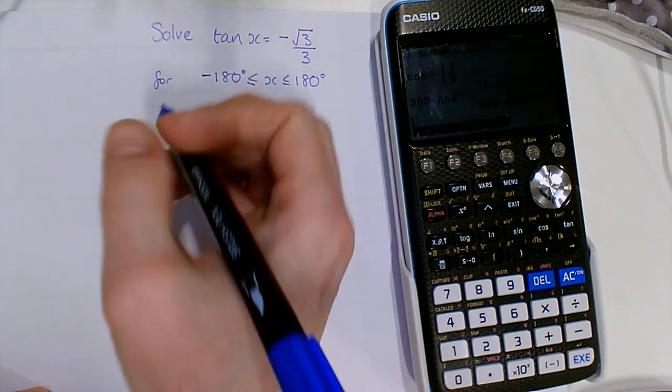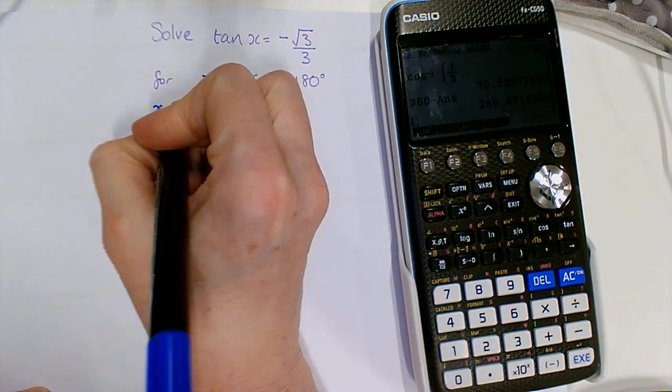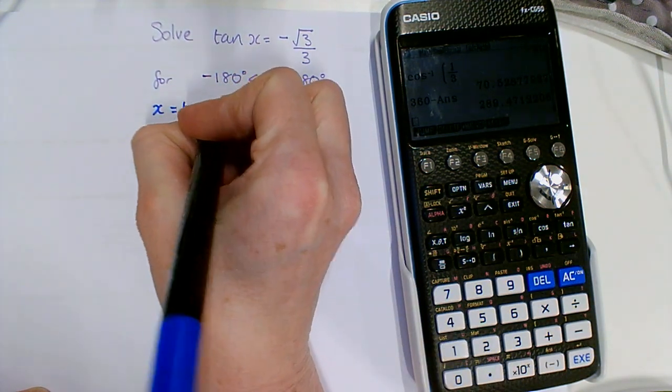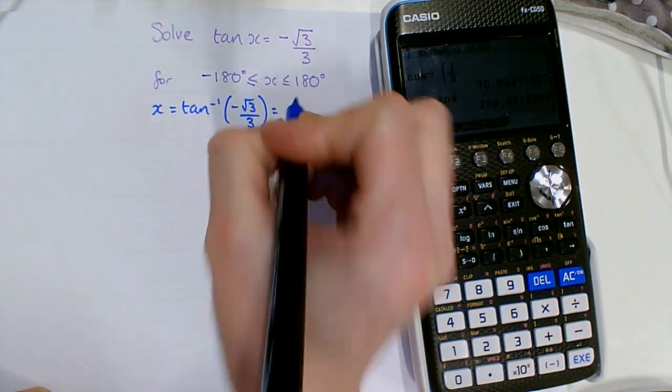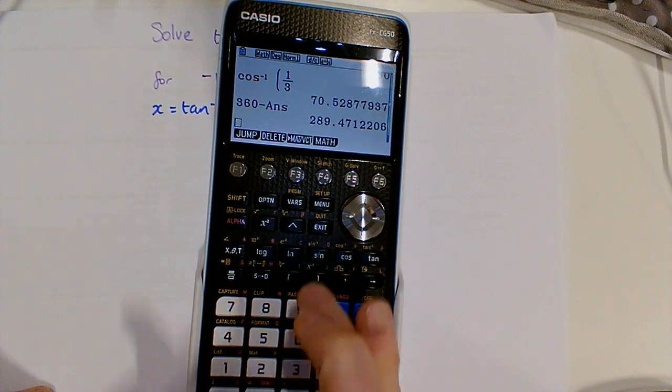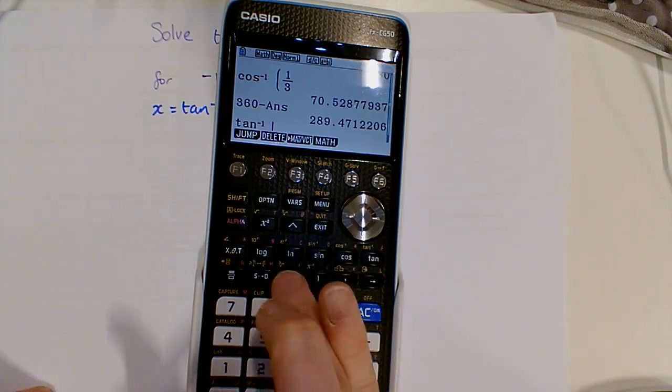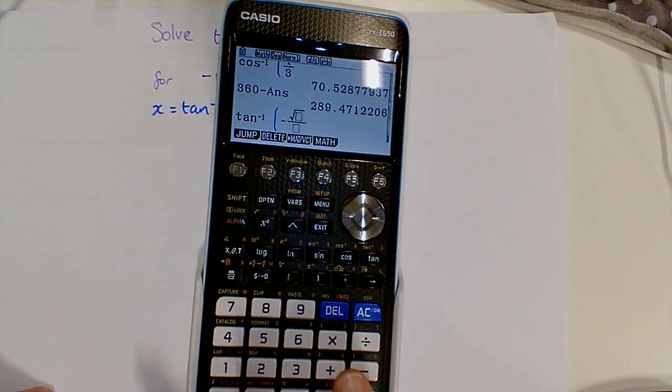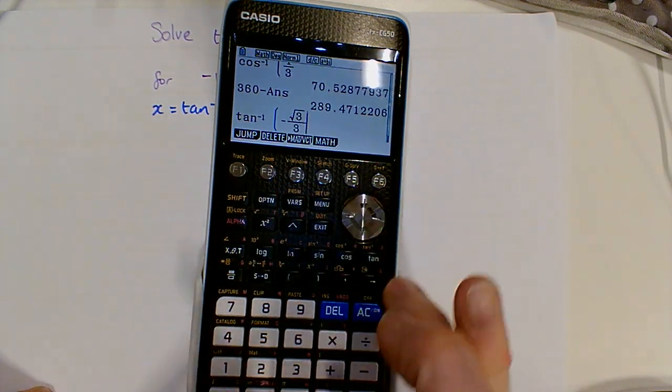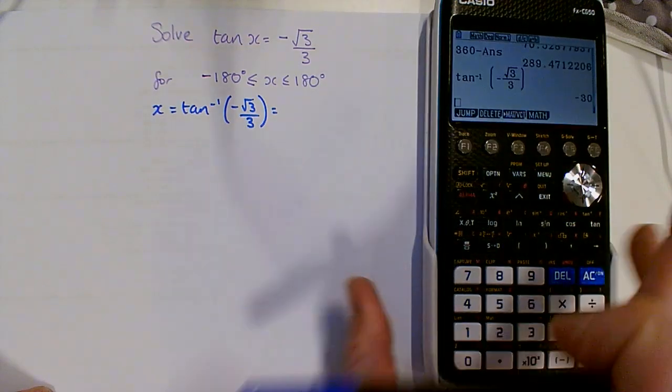So we start by just doing inverse tan, just like for GCSE. From my calculator, inverse tan and then negative root 3 over 3—so that's minus 30.